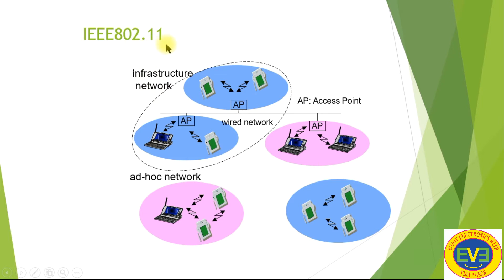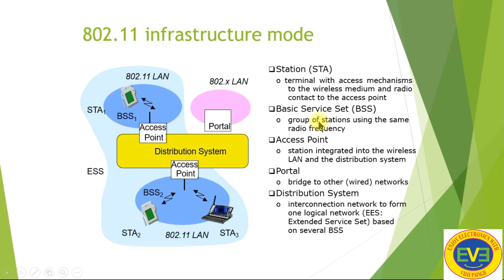In IEEE 802.11, the infrastructure network is a wired network, while the ad-hoc network is a wireless network. In the infrastructure mode, devices connect via access points, and connections between access points are wired. Different access points form the infrastructure network. Both ad-hoc and wired network topologies are shown — either ad-hoc (wireless) or wired infrastructure mode.